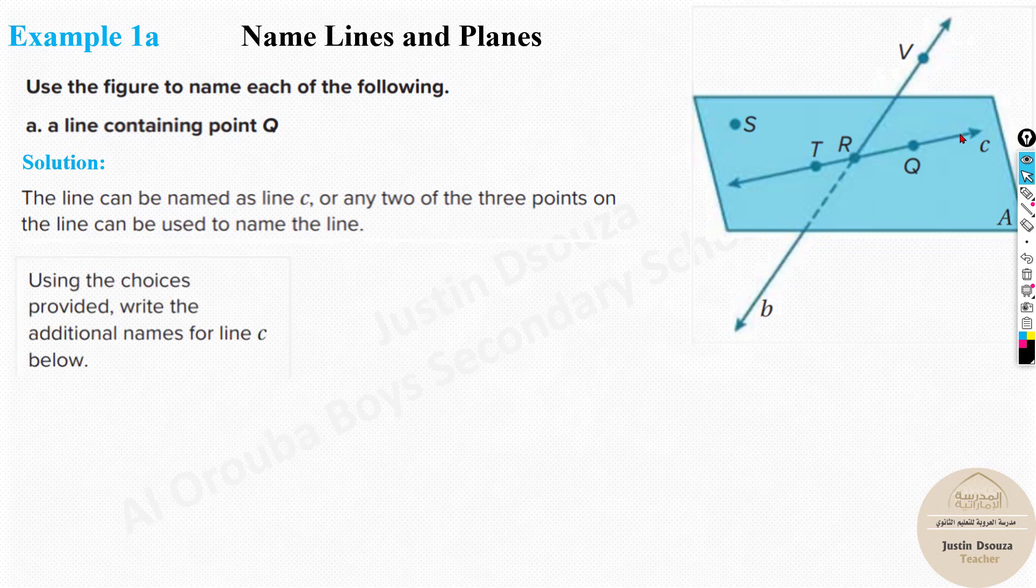And using the choice, additional name for line C. Instead of line C, what can you call it? You can, you need at least two points to name the line. See, now I can use this and this name. T, R. That's one line. Or you can just call it as TQ. TQ is one more point, one more name for this line. You can also call this as RQ.